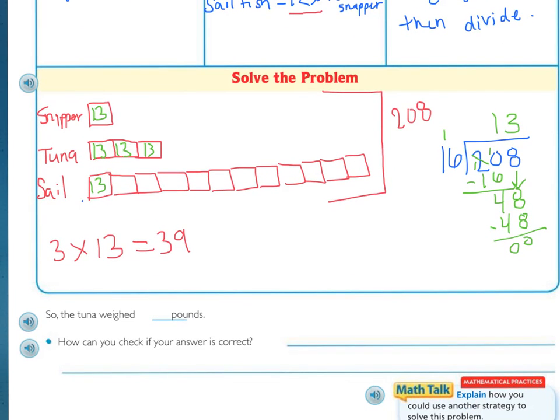So, we now know that the tuna weighed 39 pounds, and how can you check if your answer is correct? You can add the weights of the fish together, and make sure that the sum equals the total. So, in that case, you would find out what the sailfish weighed, what the tuna weighed, and the snapper, add them all together.